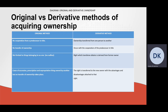In the case of derivative acquisition of ownership, ownership is transferred from one person to another, so it occurs with the cooperation of the predecessor in title. The right which the transferee obtains is thus derived from the former owner. The right is transferred to the new owner with the advantages and disadvantages attached to that right.